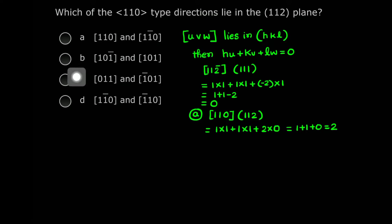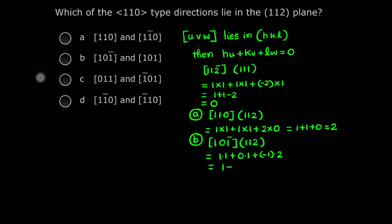Let's move to the second option. We have direction [1 0 1̄] and the plane is (1 1 2). Taking the dot product: 1×1 + 0×1 + (−1)×2 = 1 + 0 − 2 = −1. So this direction will not lie in this plane either.